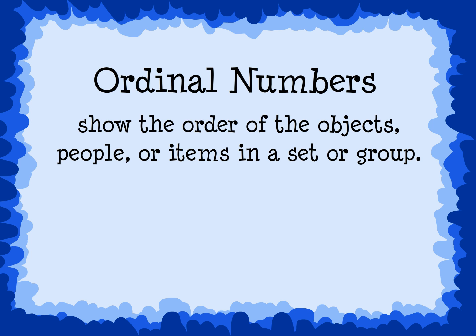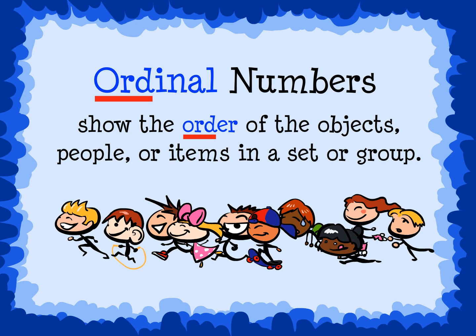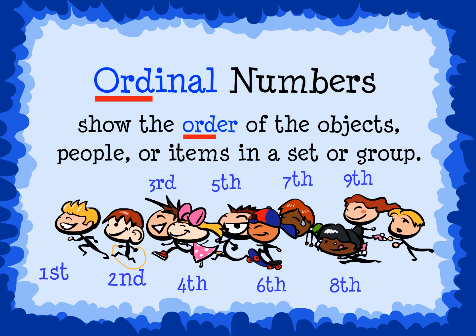Ordinal numbers are numbers that show the order of objects, people, or items in a set or group. An easy way to remember this is that ordinal numbers and order sound alike at the beginning. When objects or people are placed in order, we use ordinal numbers to tell their position. So, if ten children ran a race, we would say that the child that ran the fastest was in first place, the next child was in second place, and so on. The last person would be in tenth place.